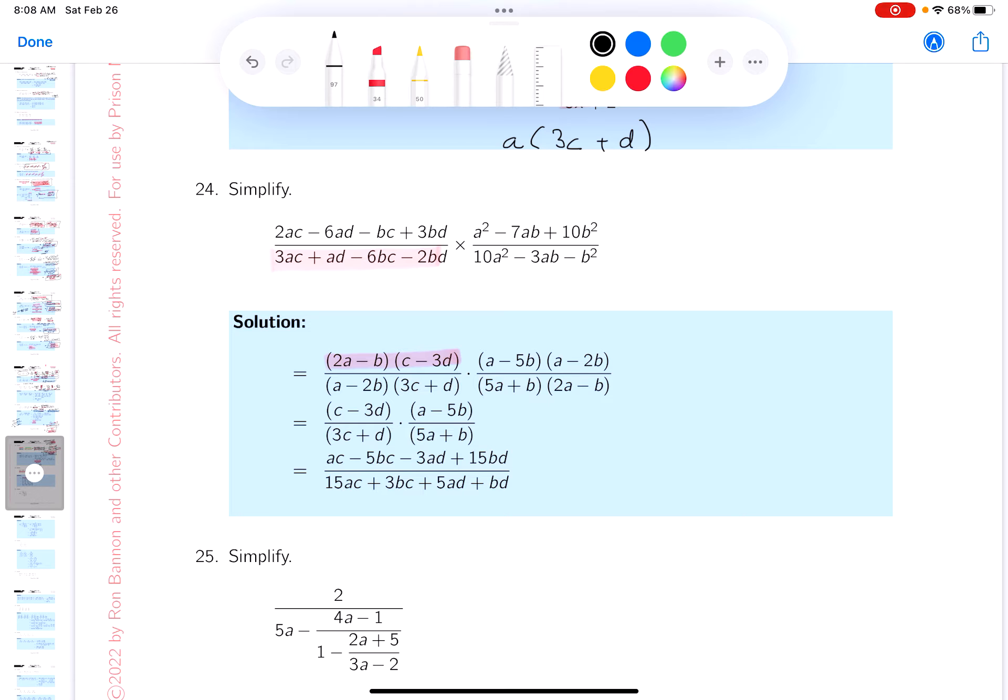The first two terms don't have anything in common, do they? Oh, they do - they have an a. Let's see, that would give you 3ac plus ad. Let's look at the next two terms on bottom. What's there? Certainly a 2 and a b, and what do you get there? You would get 3c plus d.